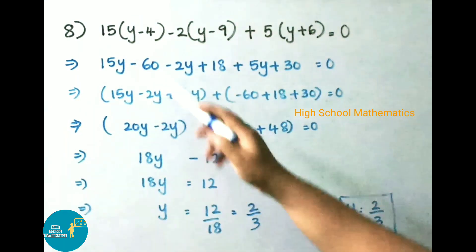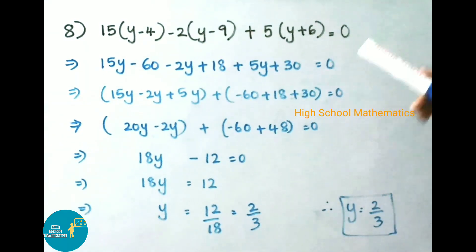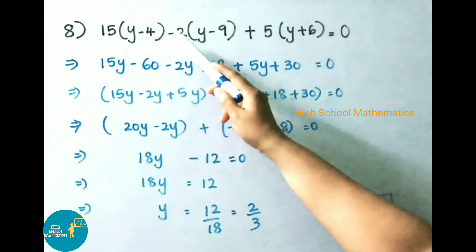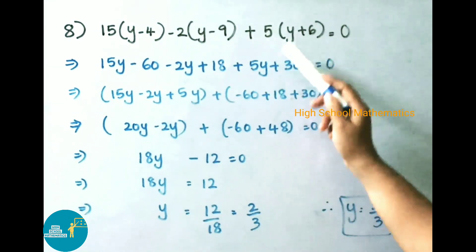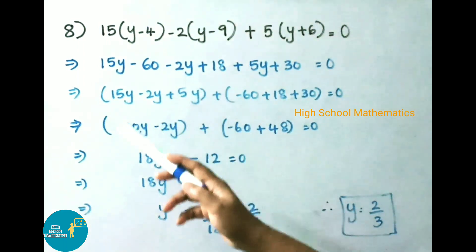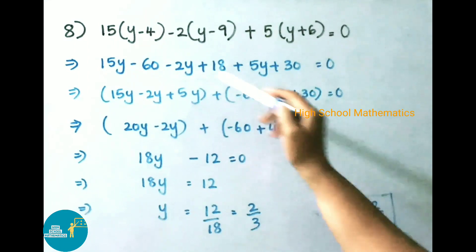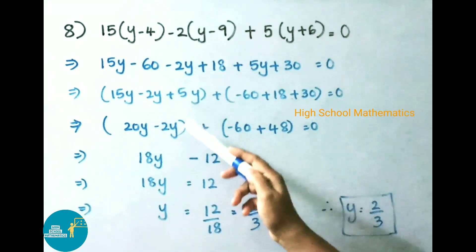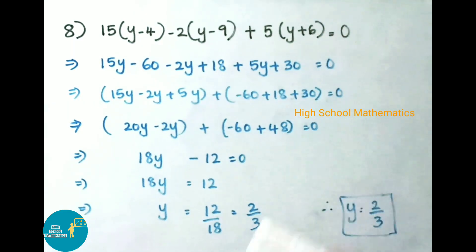See now question number 8: 15 into (y minus 4) minus 2 into (y minus 9) plus 5 into (y plus 6) equals 0. That implies 15y minus 60 minus 2y plus 18 plus 5y plus 30 equals 0. Taking y terms and numeric terms separately: 15y minus 2y plus 5y, plus minus 60 plus 18 plus 30, that is 48, equals 0.